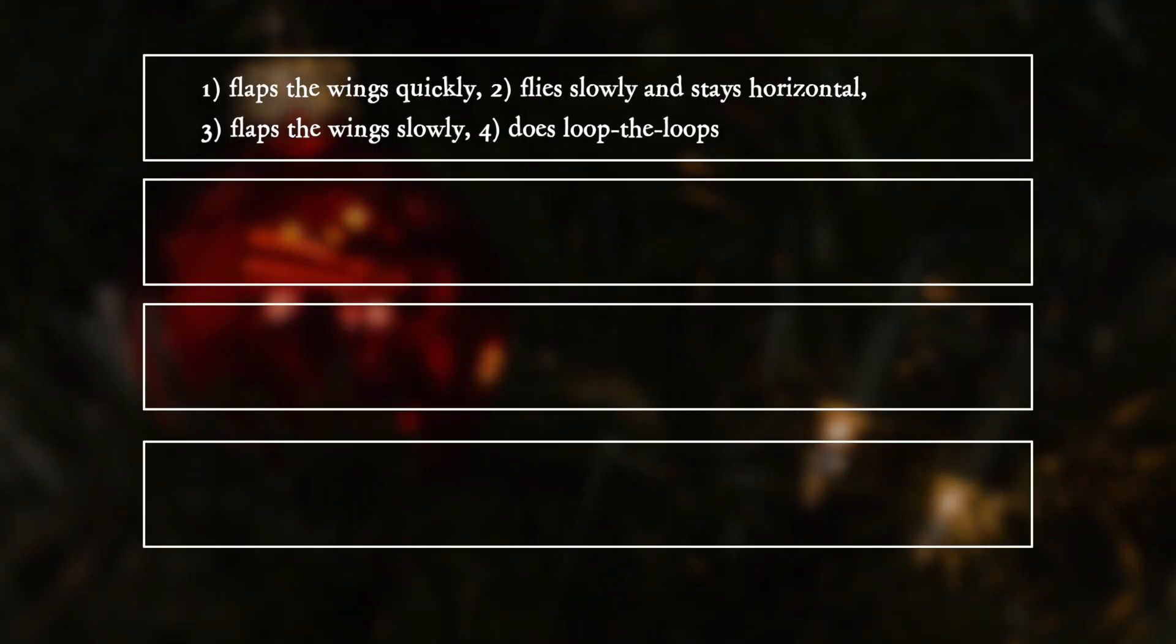A: 1 flaps the wings quickly, 2 flies slowly and stays horizontal, 3 flaps the wings slowly, 4 does loop-the-loops.